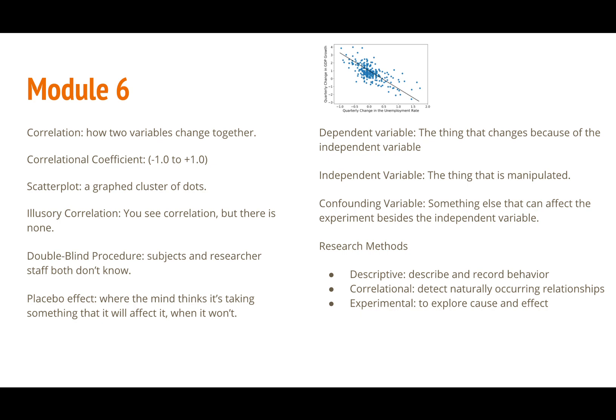Remember that the positive or negative signs don't really matter when factoring in how much something correlates. One way that data is displayed is through a scatter plot or a graph cluster of dots. When you are reading these graphs for further analysis be wary of illusory correlation or when you think you see a correlation when there is none at all.